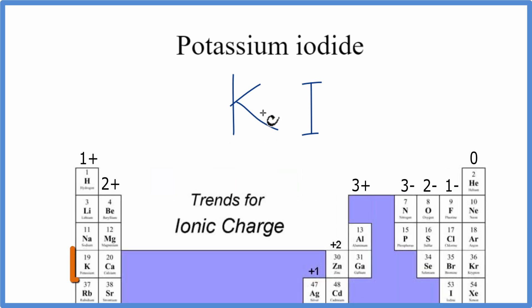So we're back to the periodic table, and potassium, it's in group one, has a one plus charge, and then iodine has a one minus charge.